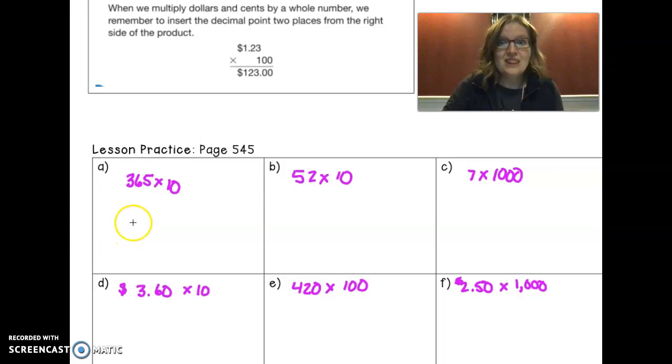I love multiplying by 10, so nice, so simple. 365 add a zero. 52 add a zero. 7 times 1,000, three zeros - 36 and another zero. That goes in one, two, so one, two, that would be right there, 36.